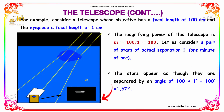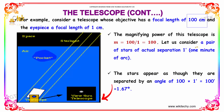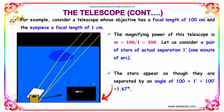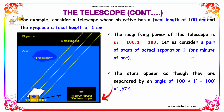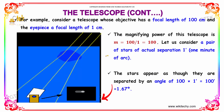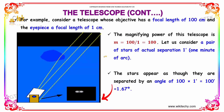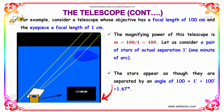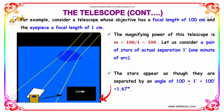Consider a telescope whose objective has a focal length of 100 cm and the eyepiece has a focal length of 1 cm. The magnifying power is M = 100 / 1 = 100. For a pair of stars with an actual separation of 1 minute of arc, they would appear separated by an angle of 100 × 1 = 100 minutes of arc, which equals 1.67 degrees.